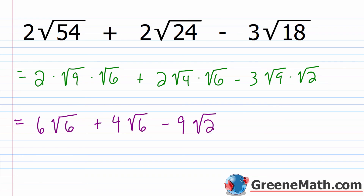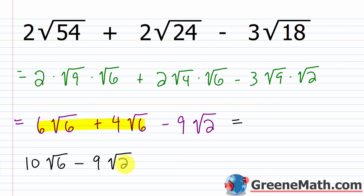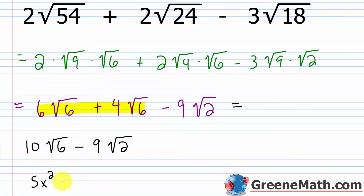Now I have like radicals for the square root of 6 terms, but the square root of 2 term is different. You can't combine them if they're not like radicals — I see that mistake all the time. So combine what we can: 6 plus 4 is 10, giving 10 times the square root of 6, and then minus 9 times the square root of 2. That's all we can do. Just like 5x squared minus 3x aren't like terms, these aren't like radicals, so that's our simplified answer.